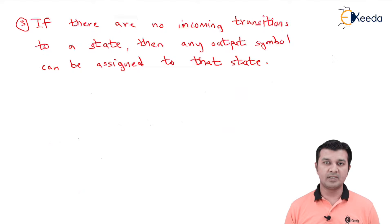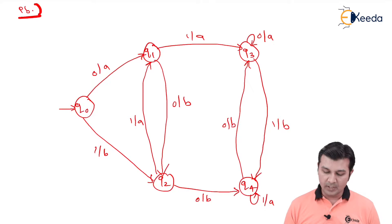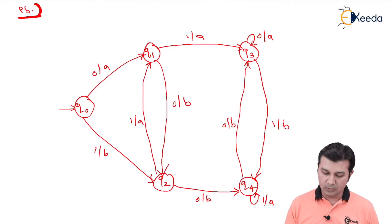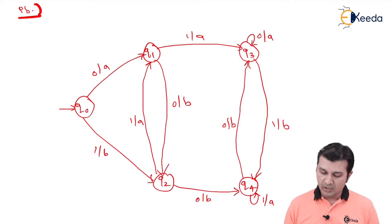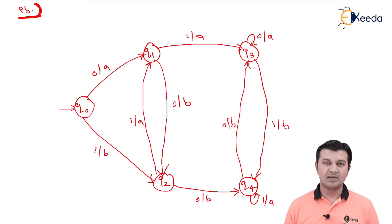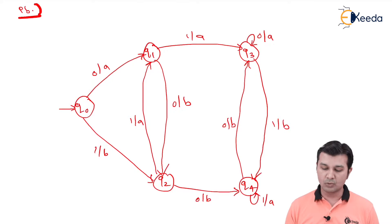The problem gives the following Mealy machine, and we are asked to convert it to a Moore machine. The outputs are associated along the edges. So q0 on 0 gives output a and goes to q1. q2 on 0 gives output b and goes to q4. q4 on 1 gives output a and remains in q4. q4 on 0 gives output b and goes to q3. Such a machine is called a Mealy machine.